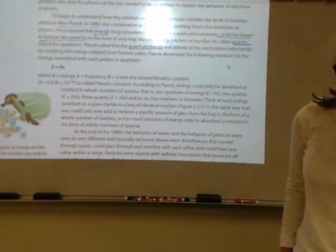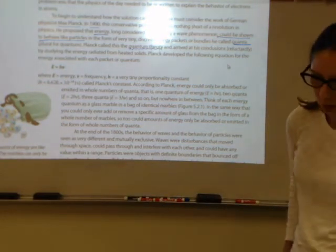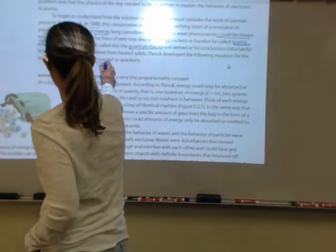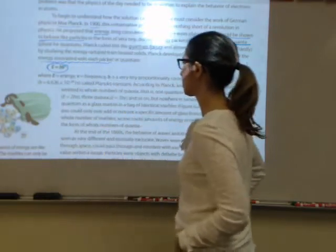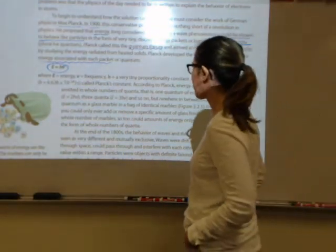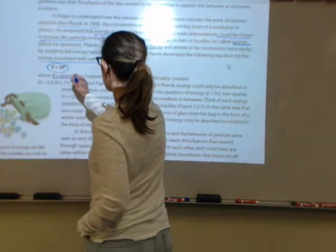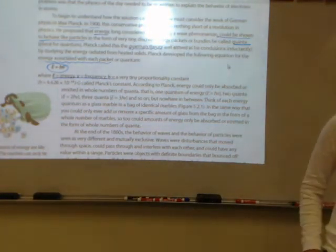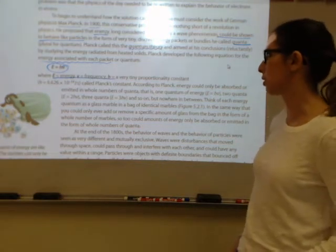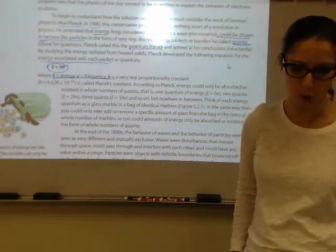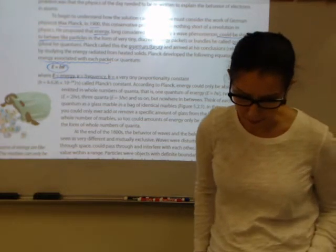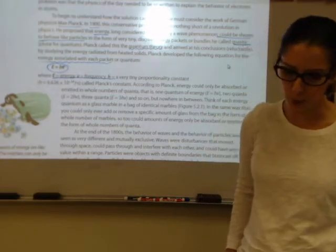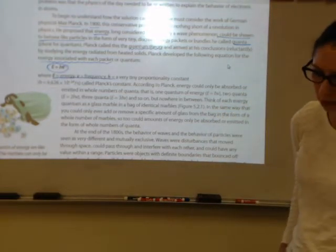Planck developed an equation for the energy associated with each packet or quantum: E equals hv, where E is energy, v is frequency, and h is the proportionality constant called Planck's constant, 6.626 times 10 to the negative 34 joules per second. According to Planck, energy could be absorbed or emitted in whole numbers of quanta.